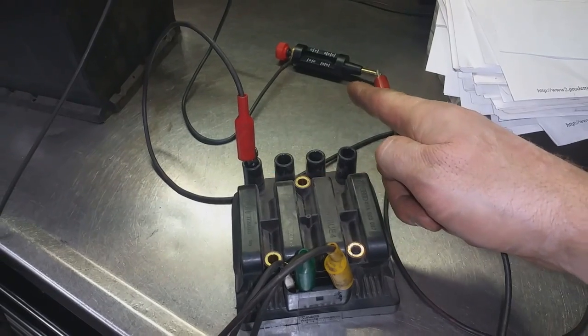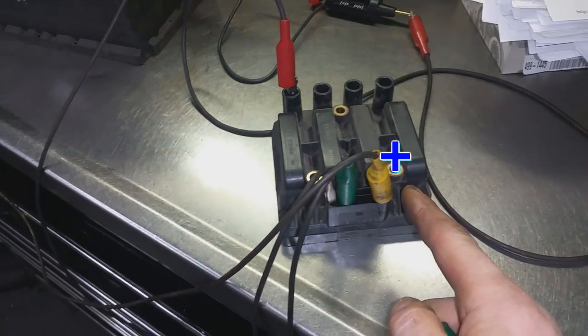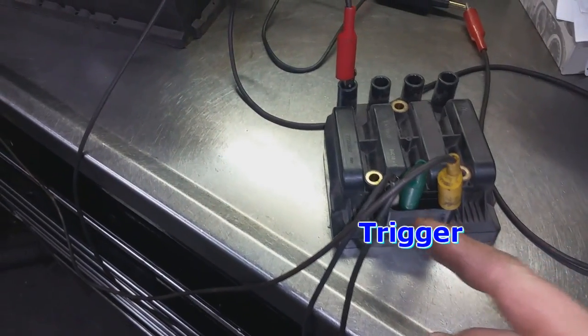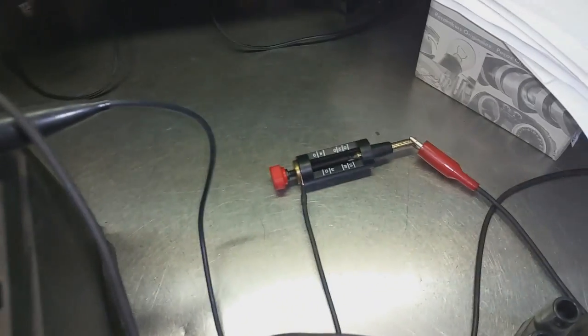So number one is hooked up, that's number one. We're going to see spark here. Yellow is positive, this one is ground, and the green is the trigger for number one. So I'm going to rub the jumper here and we're going to see spark.